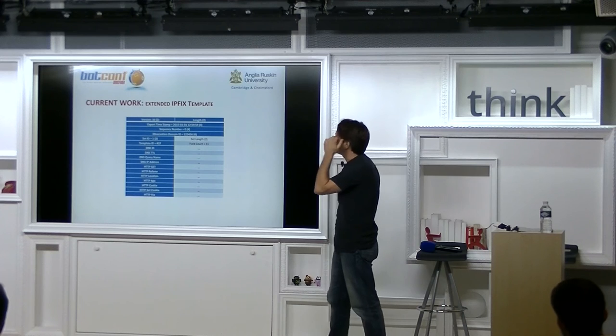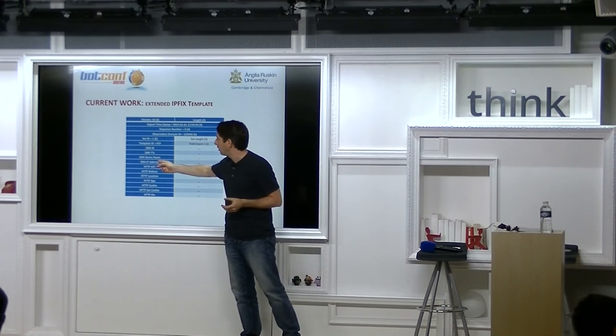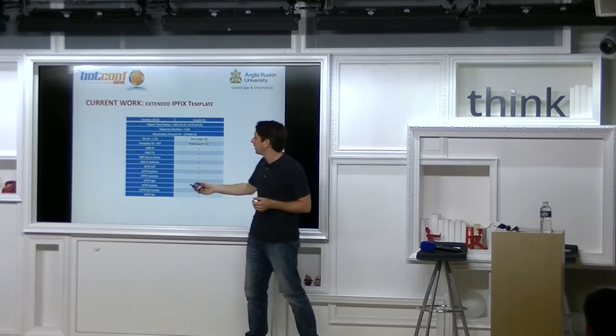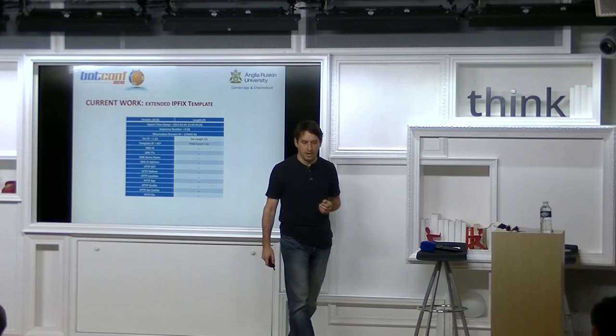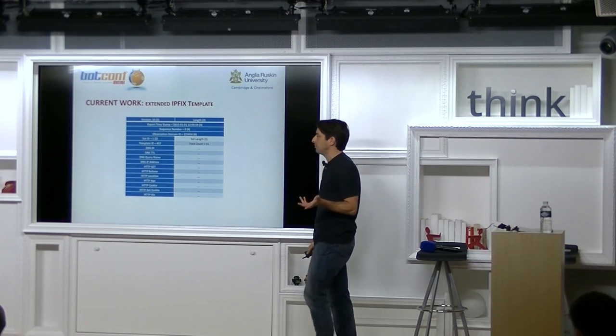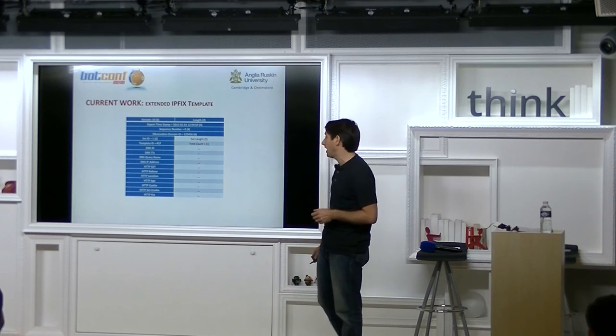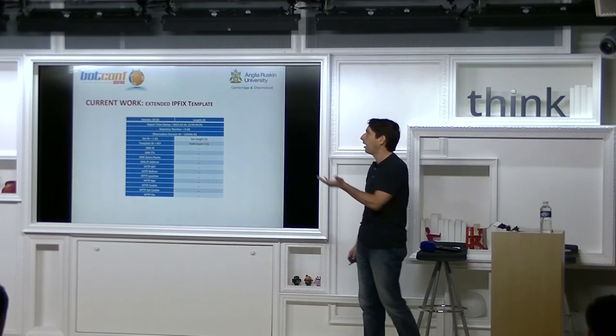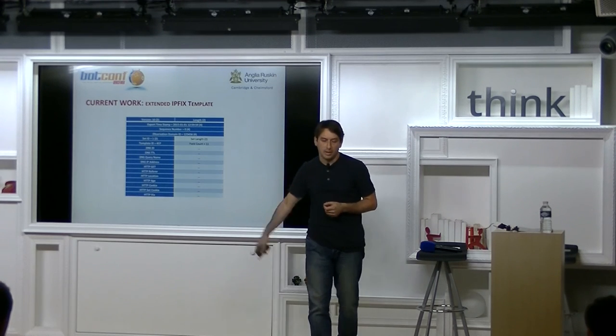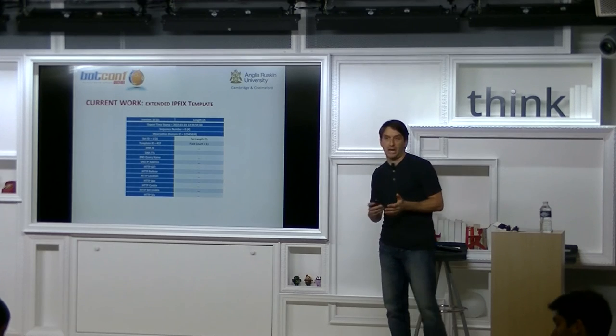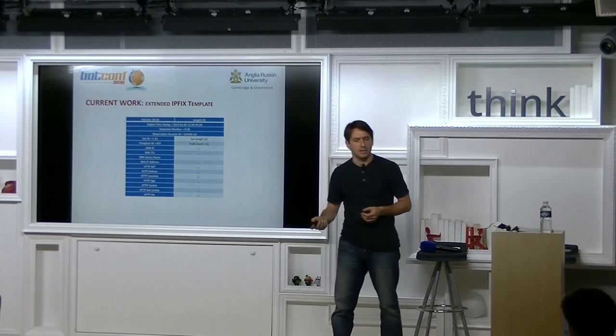This slide is showing our extended IPFix template. So we have four DNS parameters that we're capturing: ID, TTL, query name, IP address, and a bunch of HTTP parameters as well. So you could say that HTTP GET, HTTP referrer, DNS IP address, DNS query name, that's quite intrusive traffic that we're capturing there. But the technology will allow us to do that if that's what we decide to do. So, using a combination of this template and the other template that we've written, we should be able to capture significant information to detect botnets in the environment that we're looking at.